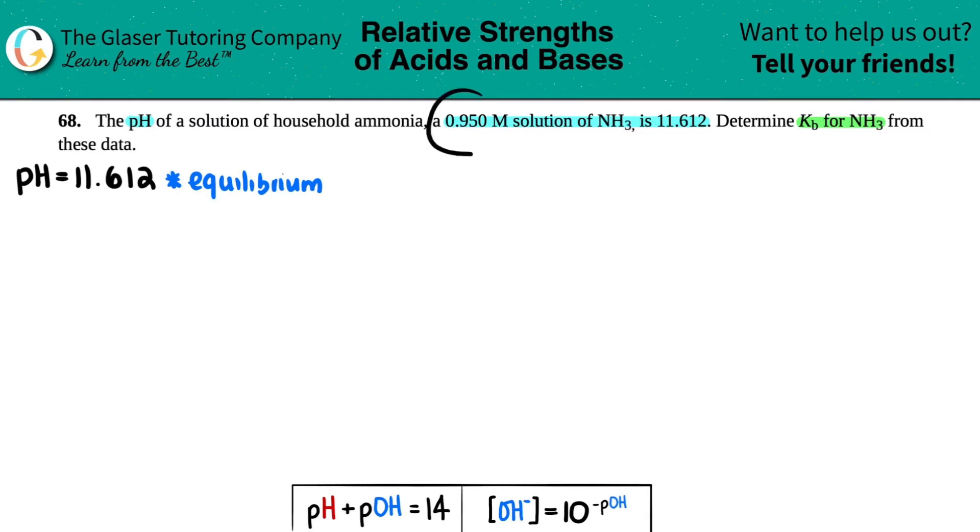They also gave us a concentration of the actual ammonia, which is NH3, so I'll write that down. 0.950 molarity of NH3. And then from that, they want us to find a Kb value. Kb, B stands for base.